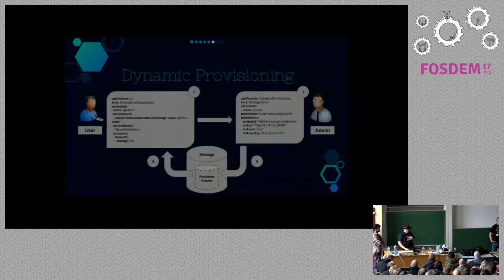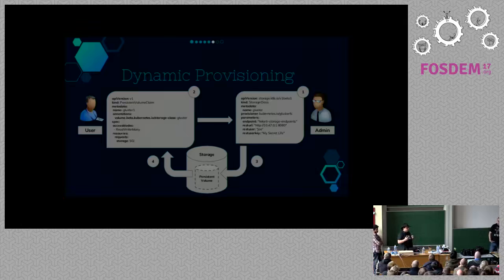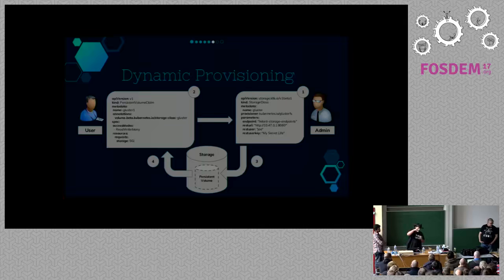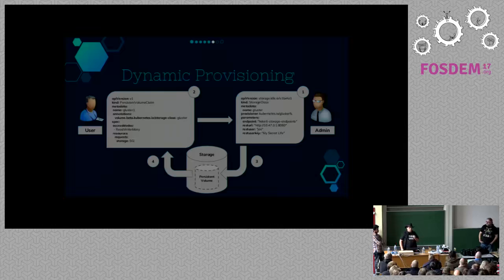We also allow for dynamic provisioning, if you're familiar with that in Kubernetes. The administrator provides a storage class which defines that applications can use some underlying storage. The admin manages that by specifying an endpoint that tells it where to access the GlusterFS pods, and a REST URL that points to the Heketi REST interface. After that, the user only needs to know the name of the storage class — in this case, 'Gluster.' When you create your persistent volume claim, it gets attached to the storage class and dynamically creates a Gluster volume on your Gluster storage. That volume gets attached to the PVC and can be used by a Kubernetes application.